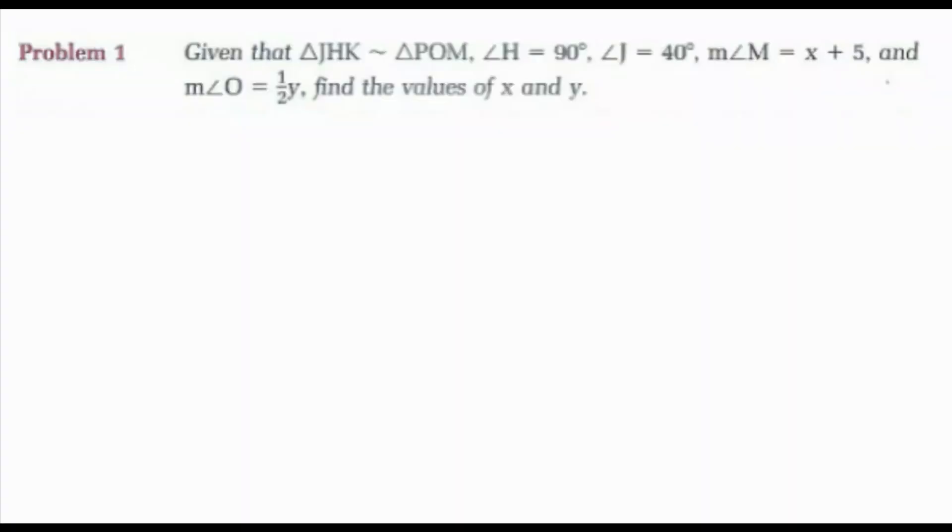Now looking at our sample problems, we have problem one. Given that triangle JHK is similar to triangle POM, angle H is 90 degrees, angle J is 40 degrees, measure of angle M is X plus 5, and the measure of angle O is one-half Y, find the values of X and Y. So if triangle JHK is similar to triangle POM, then I know their angles are congruent. So angle J would be congruent to angle P, angle H is congruent to angle O, and angle K is congruent to angle M.